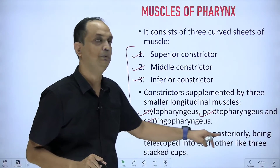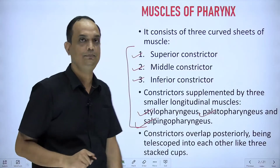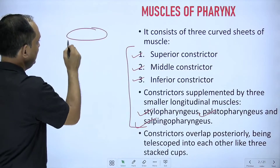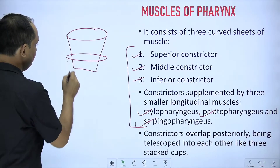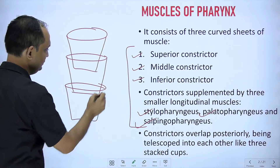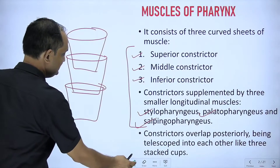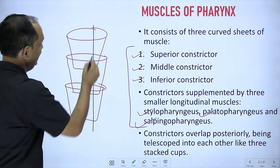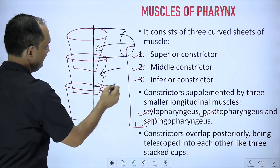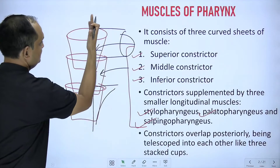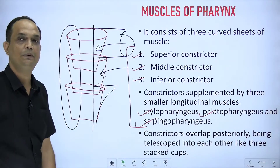The constrictors overlap each other posteriorly in a telescopic pattern — like three stacked cups — where the lower part of one muscle is covered by the upper part of the muscle below it. Importantly, this telescopic pattern is seen only in the posterior part, not in the anterior half, because the anterior half is deficient where communication exists with the nose, oral cavity, and larynx.